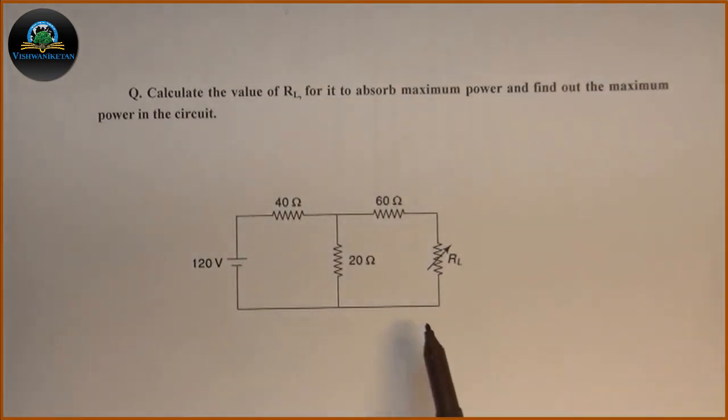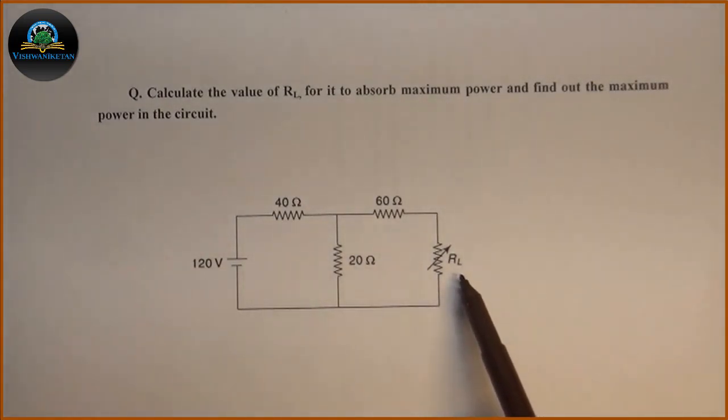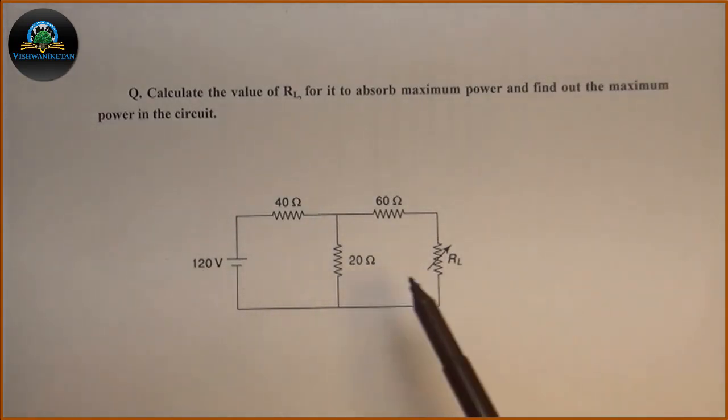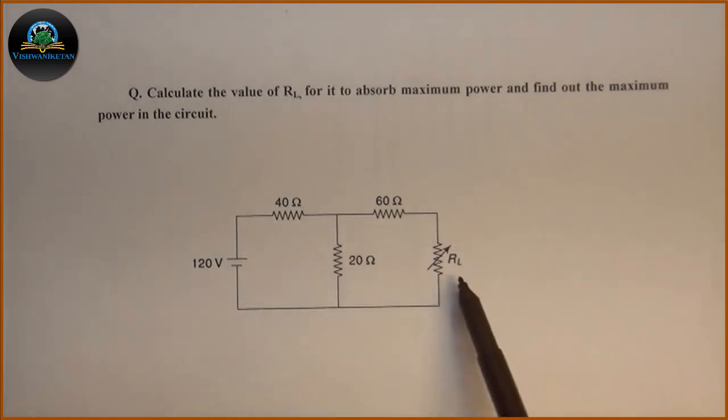The circuit is given. We have to calculate the value of RL for which the power transfer from source to RL will be maximum. And the second part is we have to calculate that value of maximum power transferred from source to RL.